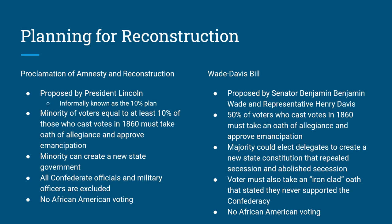I showed you this already in class, but just in case you don't remember, here it is again. There were two competing plans for Reconstruction before the war ended. One was called the Lincoln 10% Plan, formally the Proclamation of Amnesty and Reconstruction. The other is the Wade-Davis Bill going through Congress. With Lincoln's 10% plan, he basically wanted to find 10% of the people who voted in 1860 to pledge allegiance to the United States.